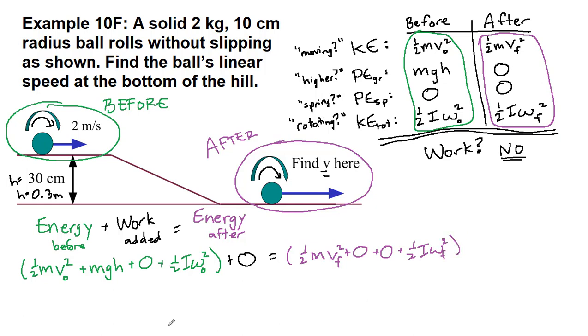We can plug in everything that we have so that we can then discuss what the special tricks are that happen here in chapter 10 that otherwise this is just a chapter 7 problem. So 1/2, our mass here is 2 kilograms. The initial velocity we're told is 2 meters per second, that gets squared. So mgh is 2 times 9.8 times 0.3. And then plus 1/2. So the I value here is for a ball. Right away, we can stop and recognize that the moment of inertia is going to be for a ball. And we can look that up, and that's going to be 2/5 m r squared.